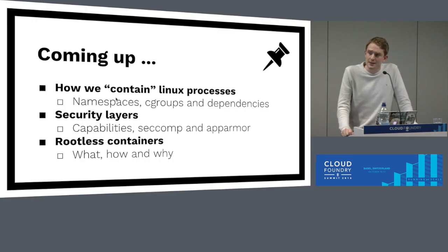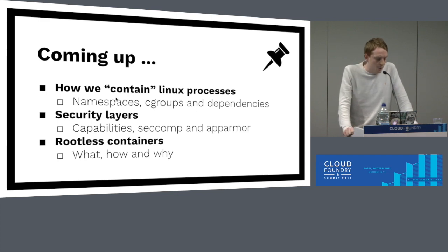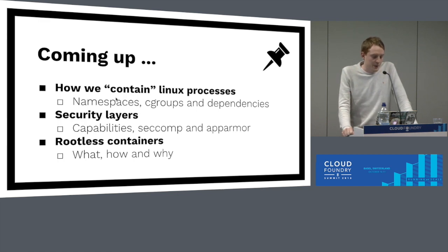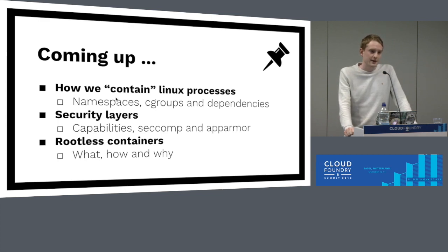So that's the intro — that's why we care about this. What's coming up? To begin with, we're going to take a deeper dive into what makes a container a container: namespaces, cgroups, and dependencies. Then we'll talk about some extra security layers we apply on top of that to make our containers as secure as possible. And finally, we'll get to rootless containers — what they are and how they fit into all of this.